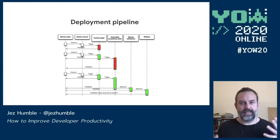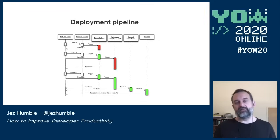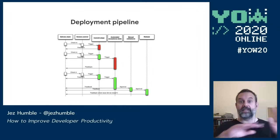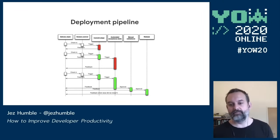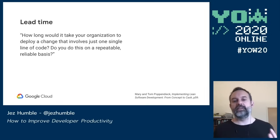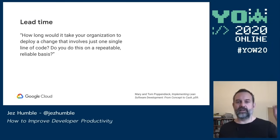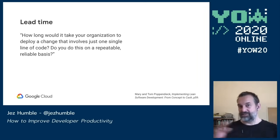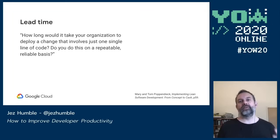That's the deployment pipeline at a glance. We need to really focus on lead time — how long it takes to get changes from check-in to release. A good question, from Mary and Tom Poppendieck in 'Implementing Lean Software Development': how long would it take your organization to deploy a change involving just one single line of code, on a repeatable and reliable basis — using your regular process, not an emergency change process? Work on optimizing that, and the practices of continuous delivery help you get faster while also improving stability and reliability.